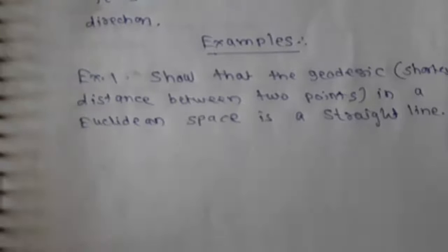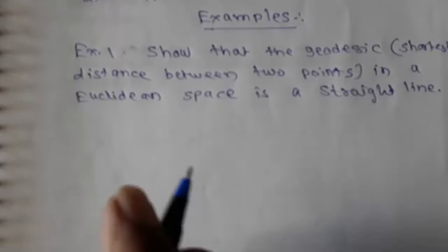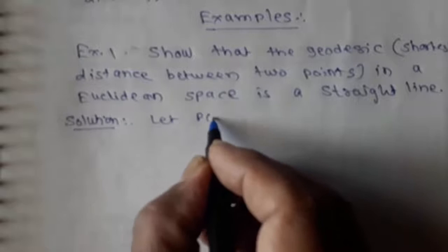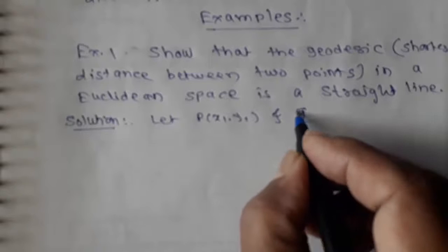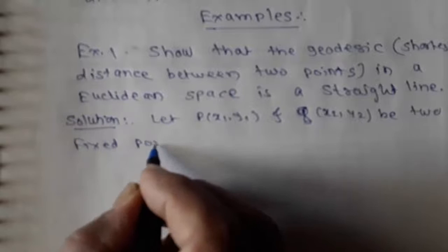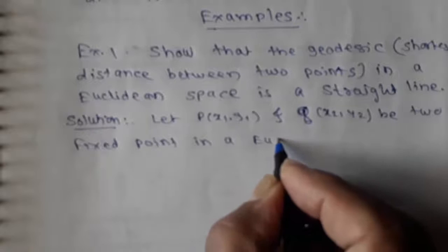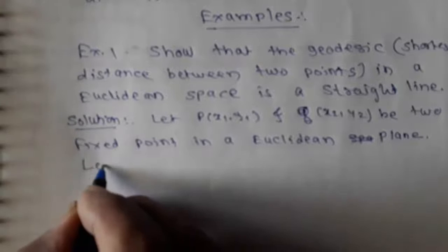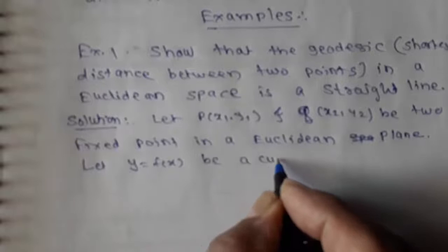We have to show that the geodesic in Euclidean space is a straight line, that means we have to prove that the shortest distance between any two points in Euclidean space is a straight line. For that purpose, let P and Q be two fixed points in the Euclidean plane. Let y = f(x) be a curve between P and Q.